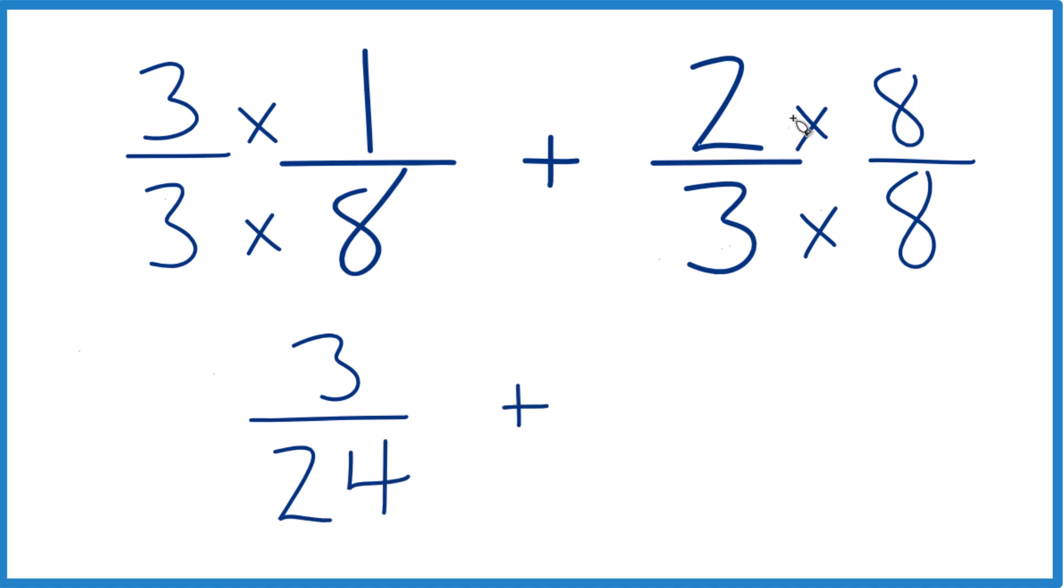Here we have 2 times 8 is 16, and 3 times 8 is 24. So now we have that same denominator there.